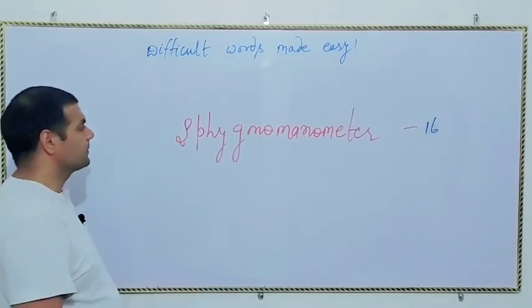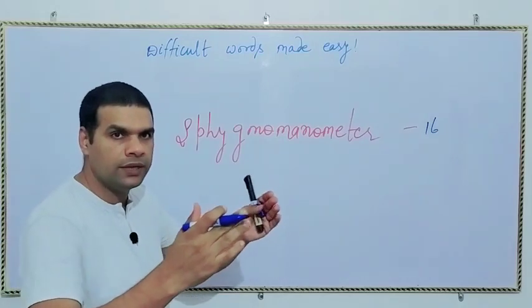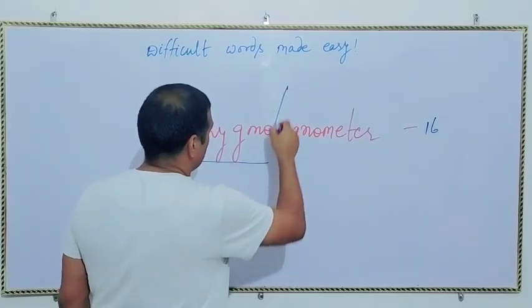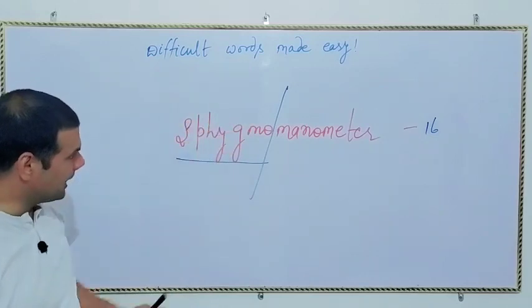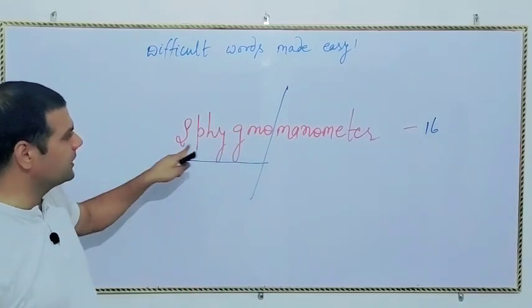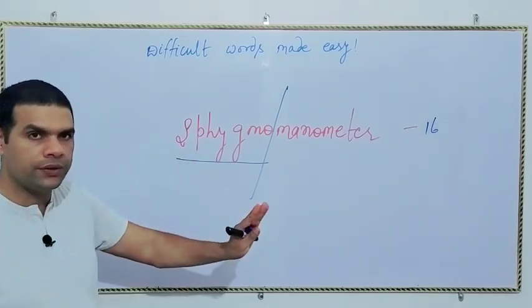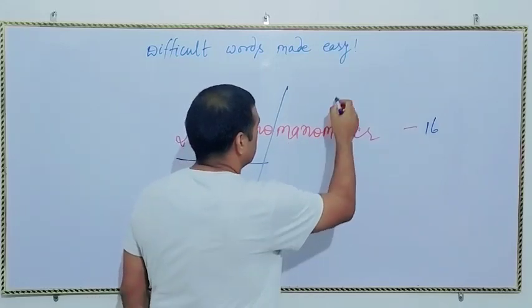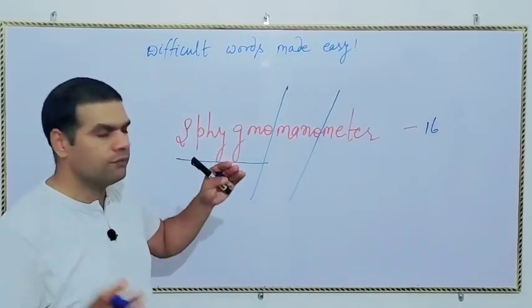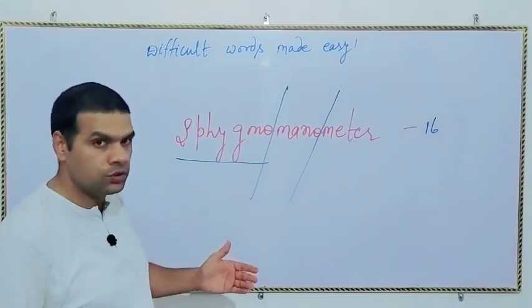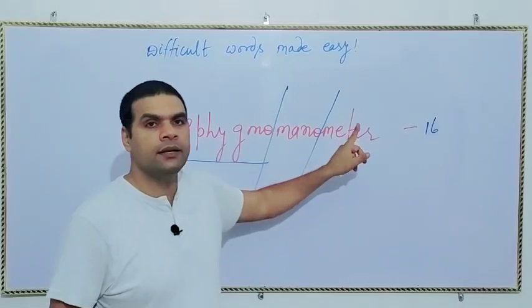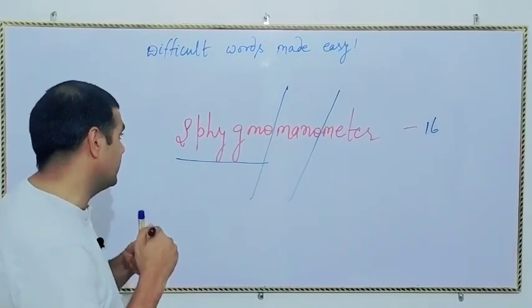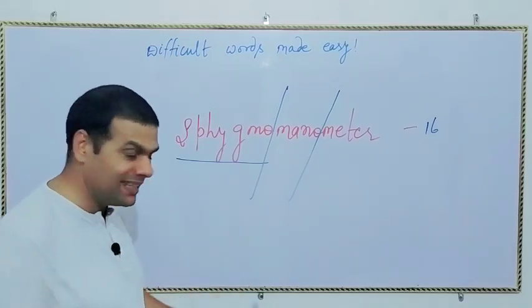So I'm going to break up this word into different units. Let's see, first of all, sphygmo - up to here I have drawn a line slashing it into two. Then I'm going to draw another line - mano - right here. So now we have three units. This word has been divided into sphygmo, mano, and meter.